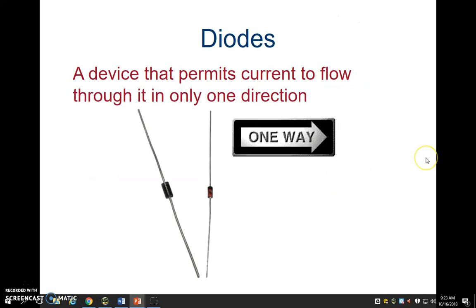The third thing we're going to learn about today is a diode — this is a device that allows electricity to go through in only one direction. You can shorten that however you want, but we do need to take a note on this definition: a device that permits current to flow through it in only one direction. It lets current go through one way and blocks it from the other — that is a diode. Go ahead and write that down now.